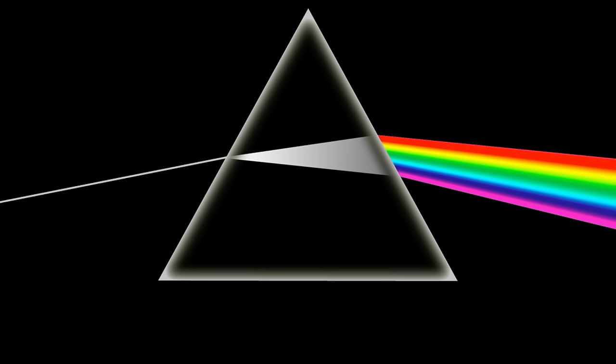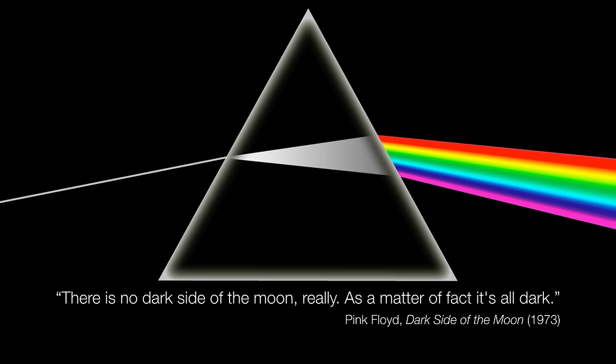If you listen to Pink Floyd's Dark Side of the Moon, you may have noticed that after the very end of the last track, there's a voice overheard that says, 'There is no dark side of the moon, really. As a matter of fact, it's all dark.' And that's a great way to wrap up this presentation, because we have shown that there is no such thing as a permanently dark side — the near side of the moon is not always illuminated. Sometimes it's dark too.